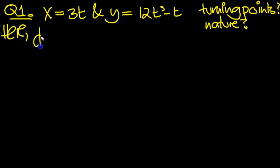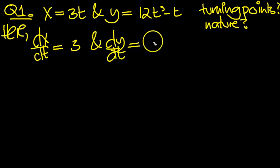So first let's get dx dt and dy dt. So dx dt, just differentiate that, differentiates to 3. dy dt, just normal differentiation, 36t squared, 3 comes down, minus 1 as t goes to 1.